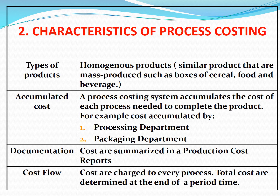Two: Characteristics of process costing. Types of products: homogeneous products — similar products that are mass produced, such as boxes of cereal and food and beverage items. Accumulated cost: a process costing system accumulates the cost of each process needed to complete the product, for example costs accumulated by a processing department and a packaging department. Documentation: costs are summarized in production cost reports. Cost flow: costs are charged to every process and total costs are determined at the end of a period.